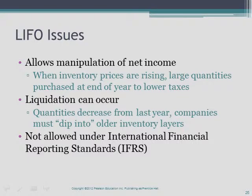LIFO allows managers to manipulate net income by timing inventory purchases. When prices are rising and a company wants to show less income for tax purposes, managers can buy a large amount of inventory near year end — under LIFO, these high costs go straight to cost of goods sold, decreasing net income. When LIFO is used and inventory quantities fall below the prior period level, this is called LIFO liquidation, which shifts older, lower costs into cost of goods sold, resulting in higher net income and higher income taxes. IFRS does not permit the use of LIFO, and when U.S. GAAP and IFRS are fully integrated, U.S. companies using LIFO will be forced to convert to another method.